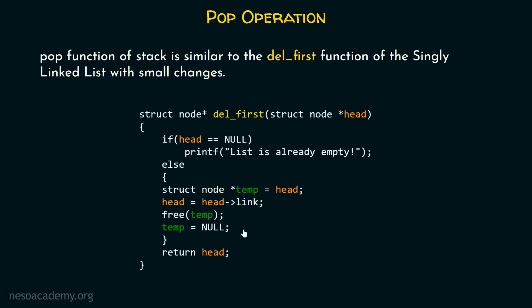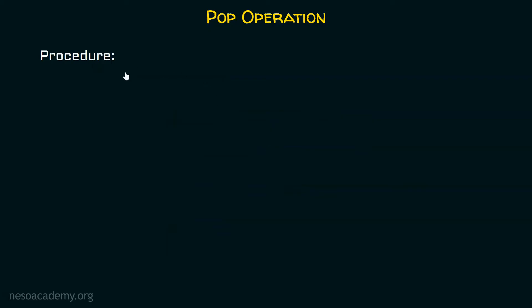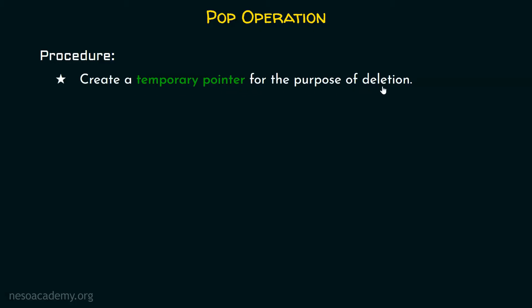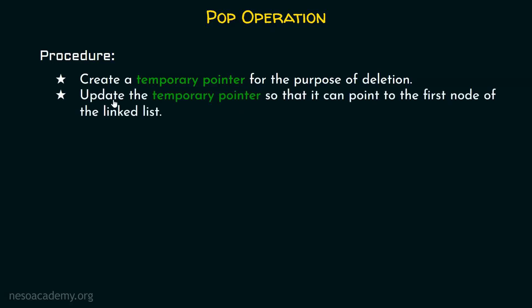This is how our delFirst function looks like — I took this code from the lecture where I explained the concept of how to delete the first node of the singly linked list. Here is the complete procedure which helps us in popping an element or deleting the topmost element of the stack. First, we will create a temporary pointer for the purpose of deletion. Then we will update the temporary pointer so that it can point to the first node of the linked list.